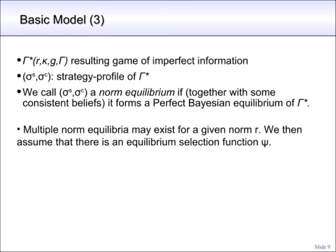The presence of compliers transforms the underlying game into a new game of imperfect information. Recall the example from the ultimatum game, where the norm forbids a responder to reject offers below 25%. If the moral motivation of compliers is high enough, a compliant responder will indeed stick to that norm. This in turn can influence the behavior of a selfish player one — if there are sufficiently many compliers, it becomes individually irrational to offer only 25%. A strategy profile of this new game consists of a pair of strategy profiles: one for selfish types and one for compliant types. We call such a strategy profile a norm equilibrium if, together with some consistent beliefs, it forms a perfect Bayesian equilibrium of the resulting game of imperfect information. We want to map a unique norm equilibrium to every norm, but since the underlying game may have multiple perfect Bayesian equilibria, we assume an equilibrium selection function that picks a unique norm equilibrium for every norm.